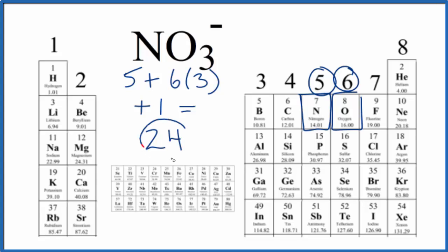24 total valence electrons for the NO3 minus ion, the nitrate ion.